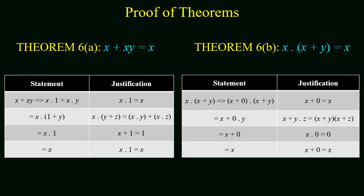Now we prove the absorption theorem. The first statement is x + x · y = x. Starting with x + x · y, we write x as x · 1 since x · 1 = x. Applying distributive law gives x · (1 + y), and since 1 + y = 1, the expression reduces to x · 1 = x. Therefore, x + x · y = x is proved.